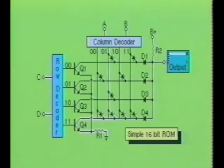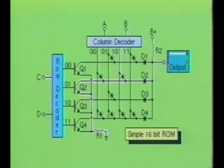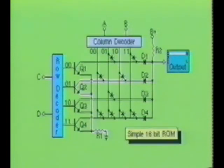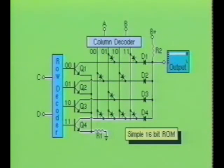This sequence continues throughout the entire ROM device. First a row is selected, then the columns are selected one at a time. Every time a diode is placed between the row device and the column decoder, current flows through the selected diode, causing the output to go high. When there is no diode connecting the row to the column, current flows through resistor R2, bringing its bottom closer to ground potential and producing a low at the output. Even though this simple circuit has only one output, its basic operating principle remains the same regardless of the number of outputs.